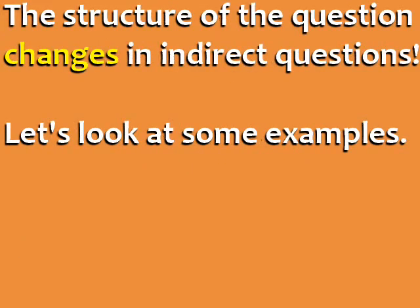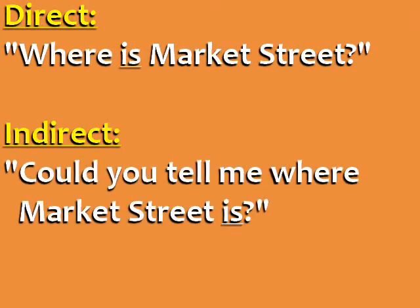The structure of the question changes in indirect questions. Let's look at some examples. Direct: 'Where is Market Street?' Indirect: 'Could you tell me where Market Street is?' In indirect questions, forms of the verb to be — like is, are, and were — come after the subject, not before the subject.